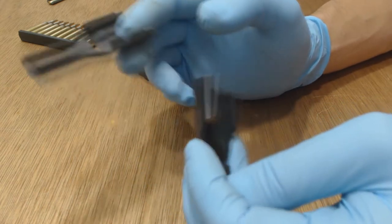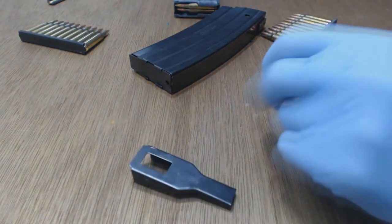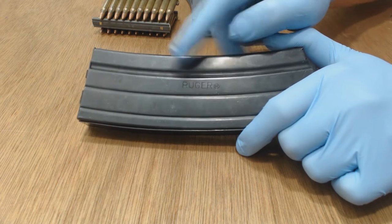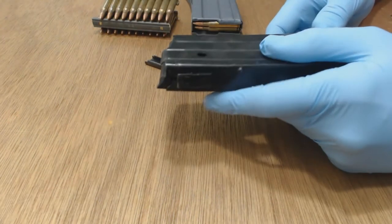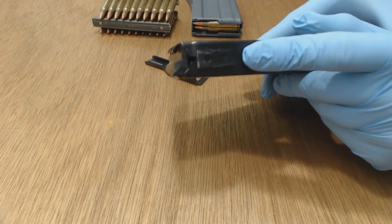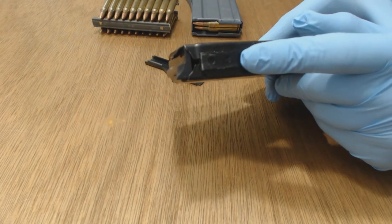As you can see, pretty big difference between the two of them. The mini 14 loading spoons will work on all the factory mini 14 magazines that have a lip on the magazine like this.